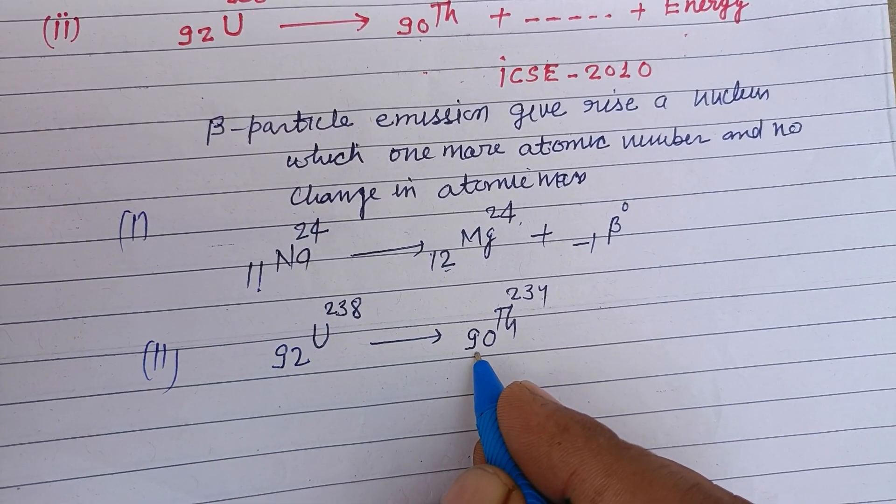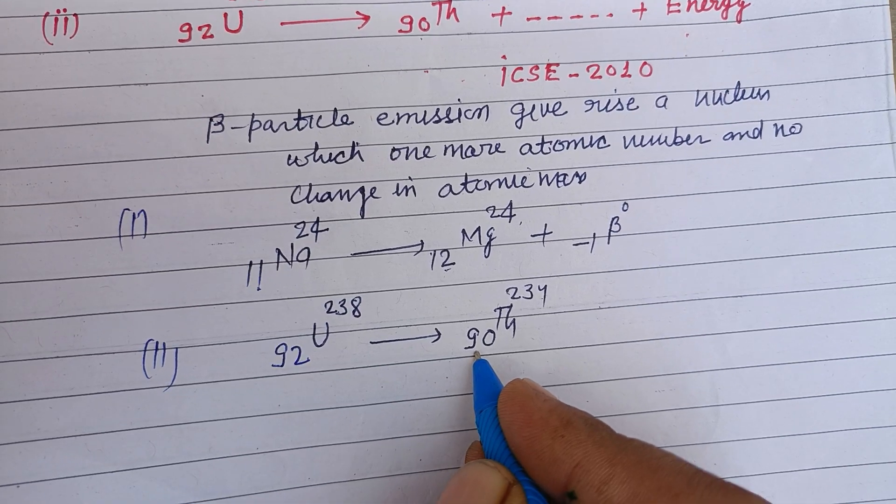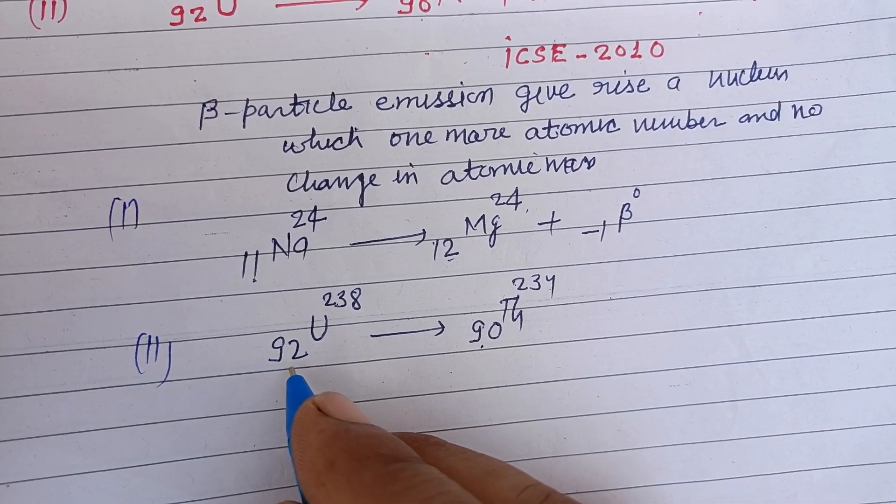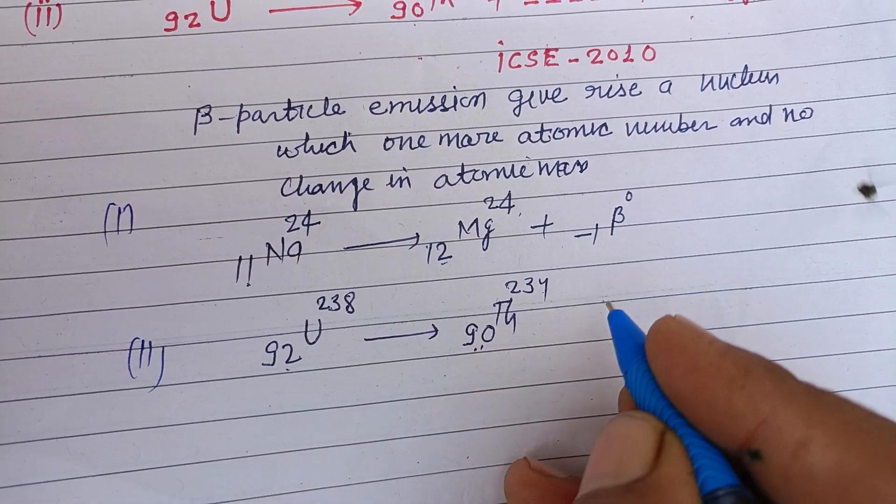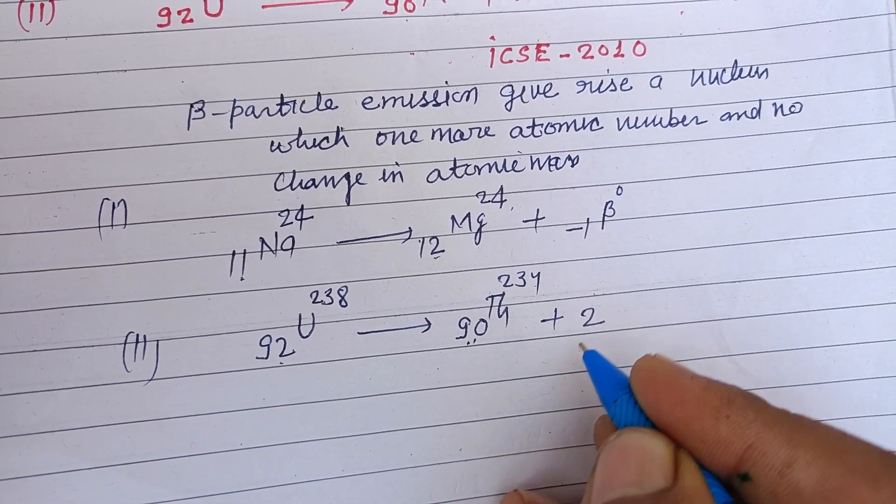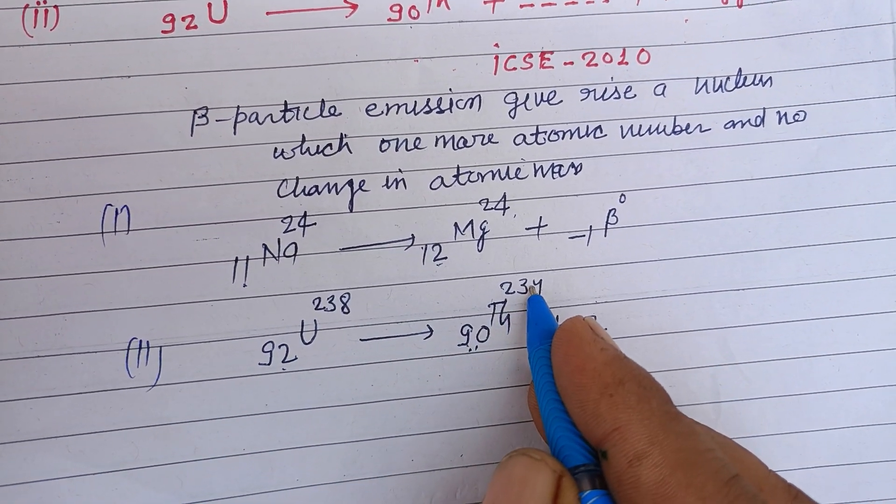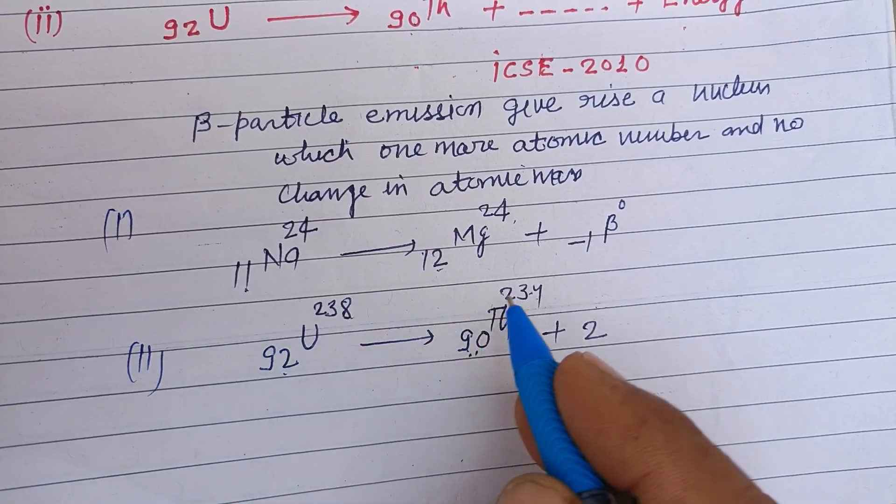There is a reduction of 2 protons in the atomic number, so we write 2. Here there's a reduction of 4 in atomic mass.